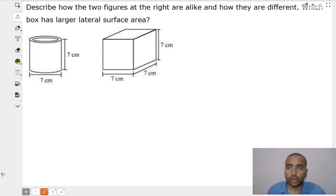So in this problem we can see, describe how the two figures at the right are alike and how they are different. Which box has the larger lateral surface area? Very simple. So, what is the similarity between the two figures? Let us understand.